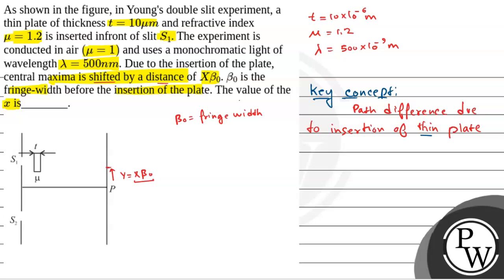Let's say that a thin plate of thickness t and refractive index mu is inserted in front of the slit. So path difference, del x, that is mu minus 1 into t. Okay, so this is the path difference.